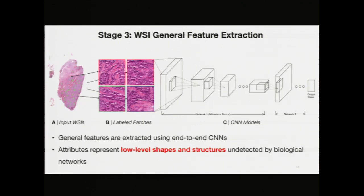I also performed general feature extraction for my whole slide images by creating a new type of convolutional neural network to identify and extract structural features across the entire whole slide image. This network was based on a two-stage approach, where the first stage identified tumor-relevant extracted features, and the second used those features to make predictions regarding the entire class of the whole slide image — grades one, two, or three. The attributes these networks extracted in the second stage represent low-level shapes and structures currently undetected by biological methods, and allowed my method to extract potent biological attributes not yet identified in the literature, which may prove useful for future breast cancer prognosis.